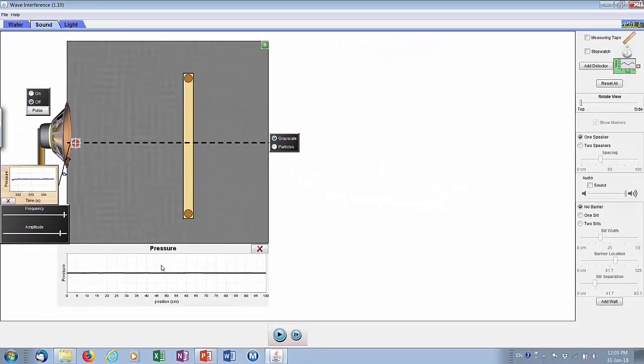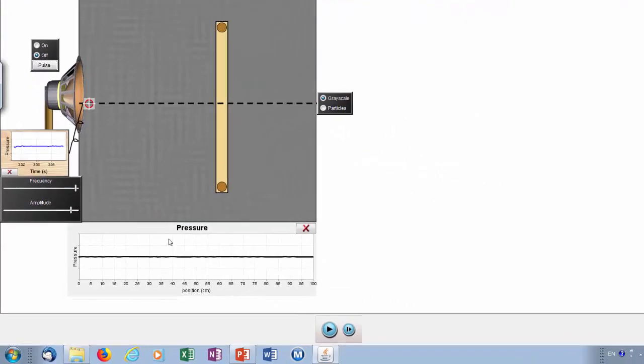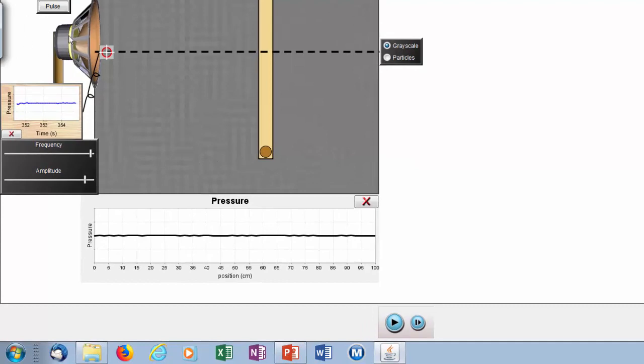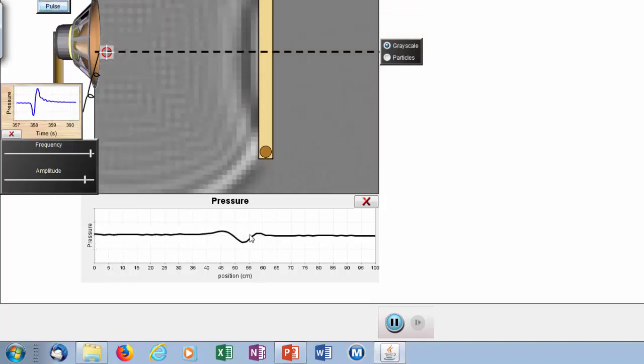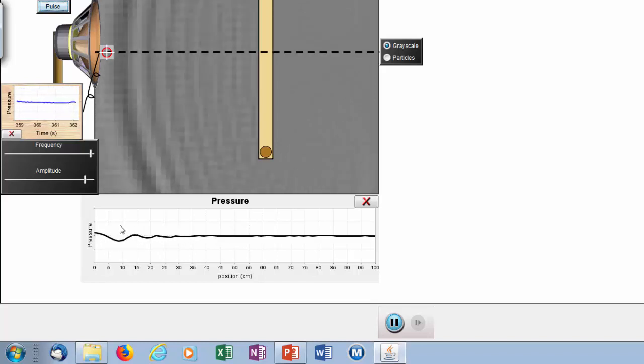Okay, so also, of course, we can look at the pressure graph again. So, let's try again. Focus on the pressure graph. It goes, it hits the wall, and it comes back, and we try to register this.